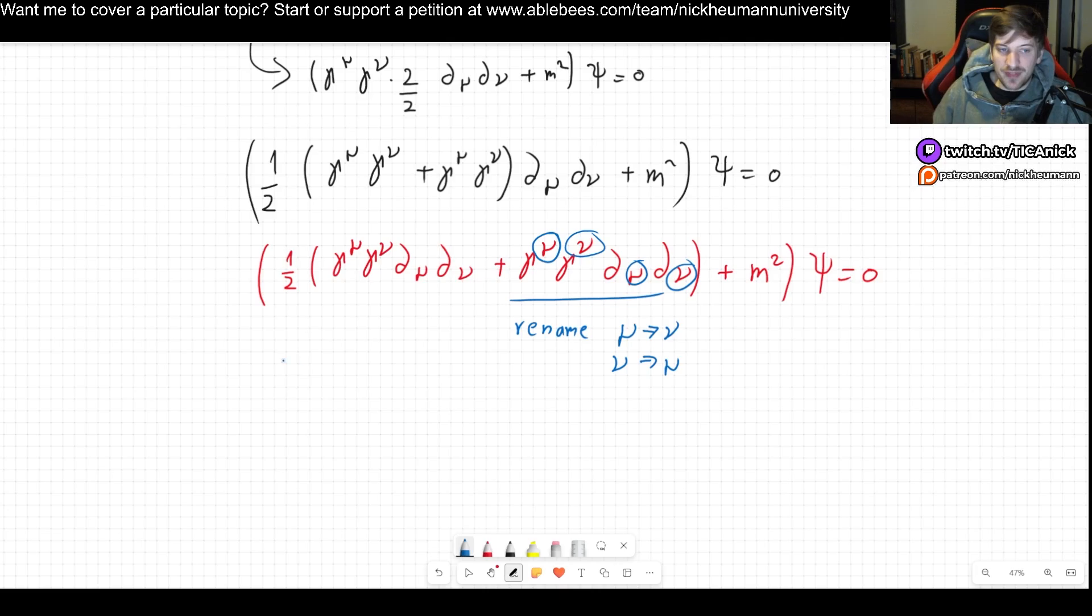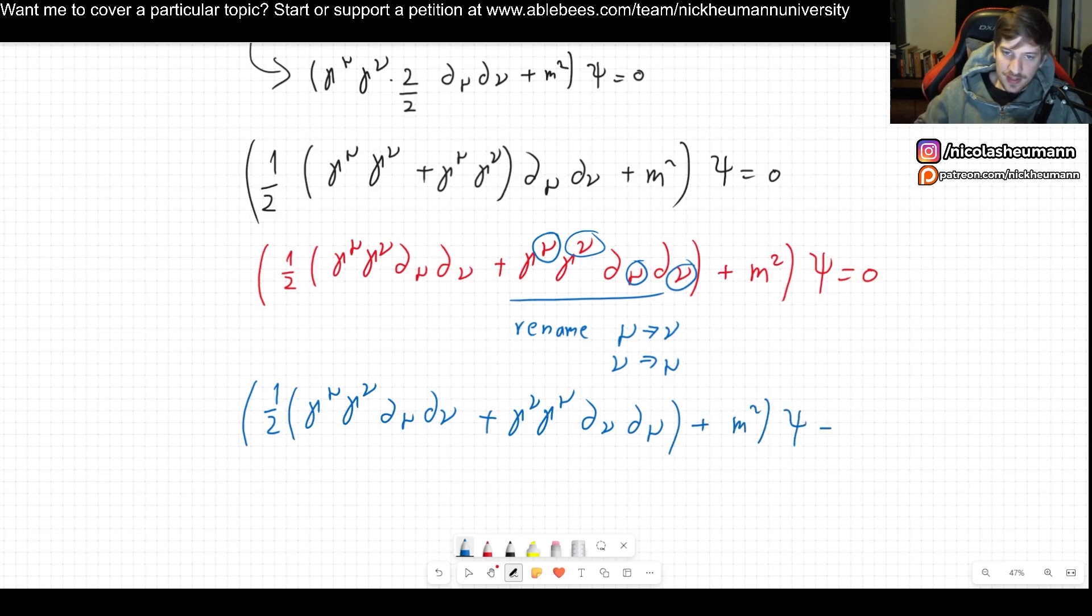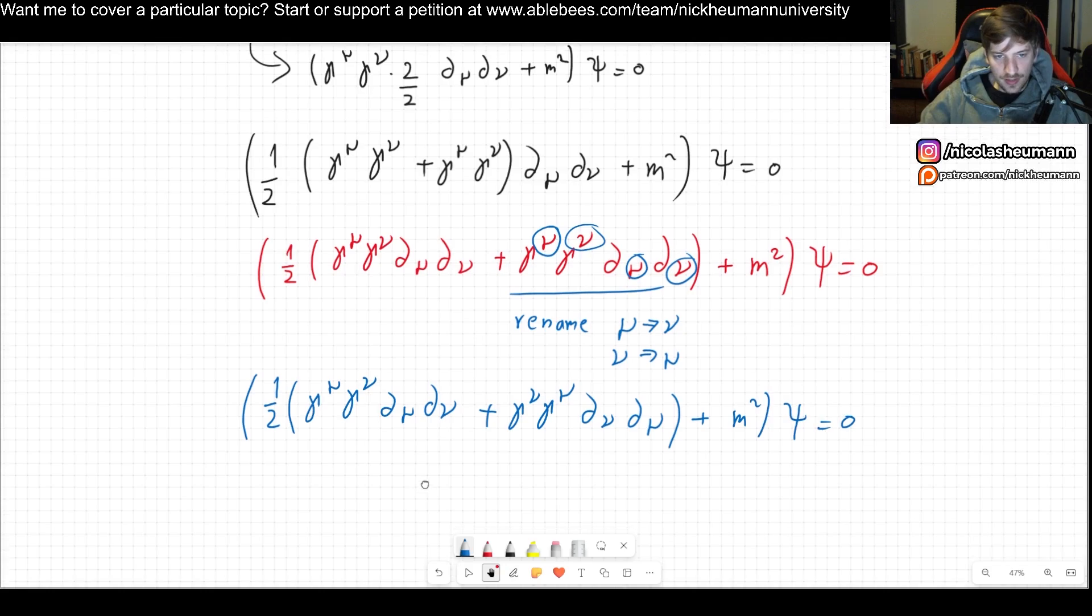So now be very careful. I am not commuting them, that's different. I am simply renaming the mu del nu plus and now I have gamma nu gamma mu del nu del mu plus m squared psi equals zero.